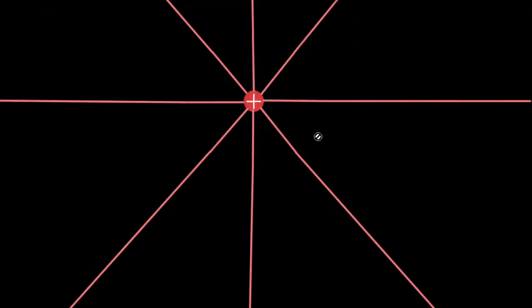Here we have a stationary positive charge and we can see the electric field lines coming out of it going in all directions. Since this is a positive charge, the electric field lines are going away from the charge in all directions. When the charge is stationary, we see no disturbance in the electric field lines — they go radially outwards and there is no sign of any electromagnetic wave whatsoever.